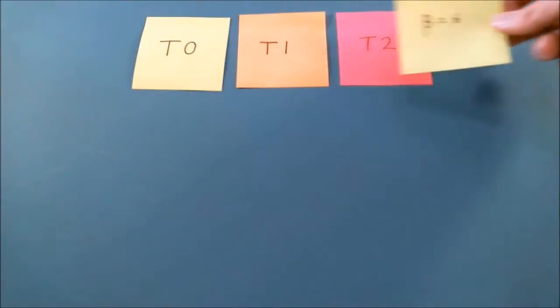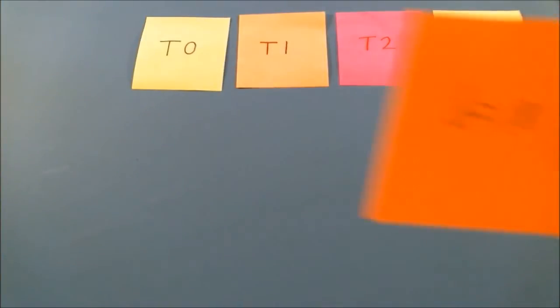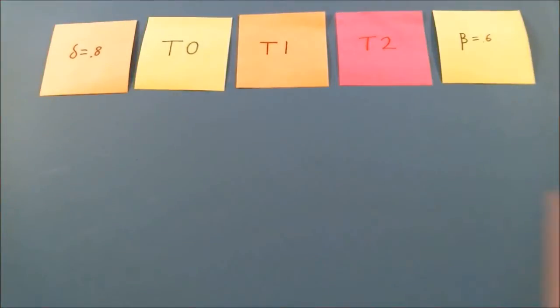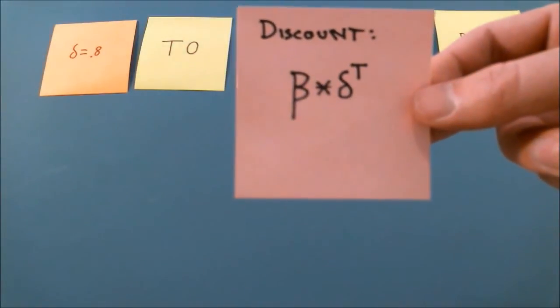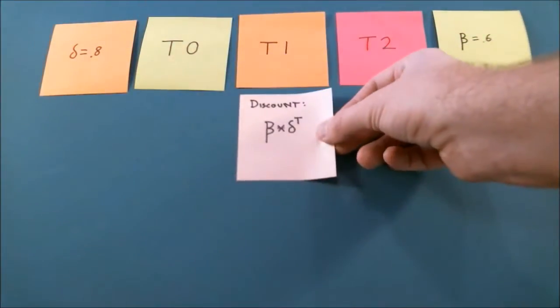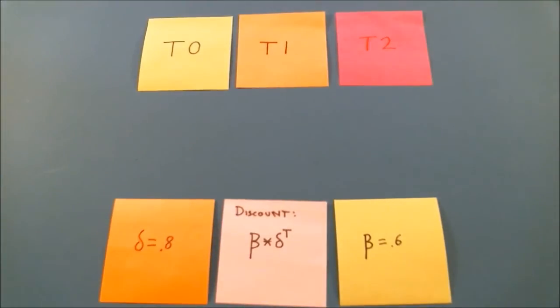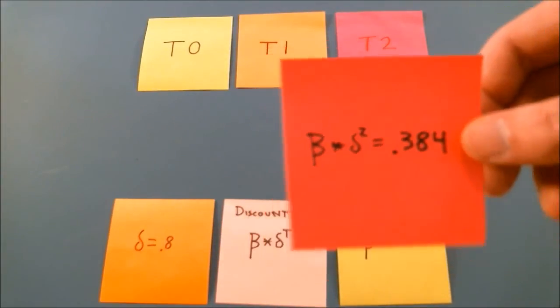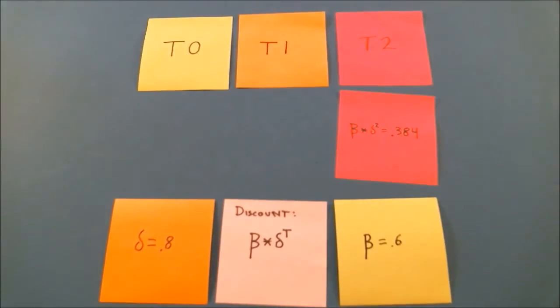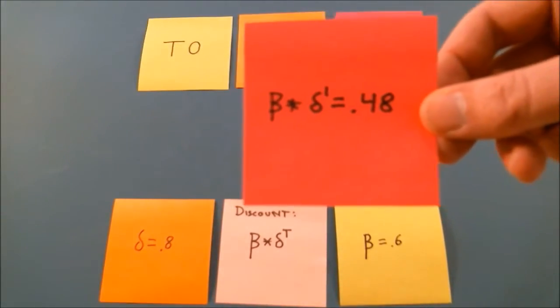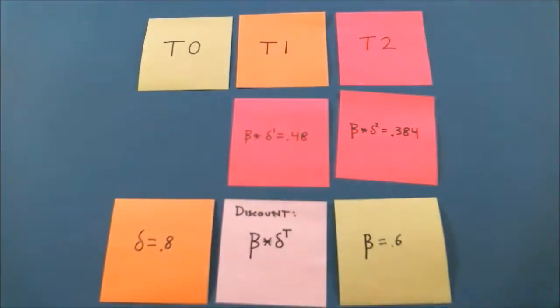In this example, beta equals 0.6, and delta equals 0.8. Let's say I discount the future with this quasi-hyperbolic formula, which is beta times delta raised by T, where T equals the future time period's number. This means I'll discount the value of something in T2 to 0.384 of its true value, and the value of something in T1 to 0.48 of its true value.